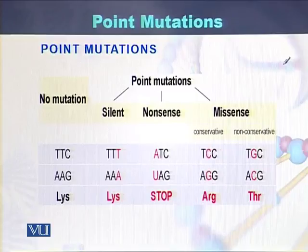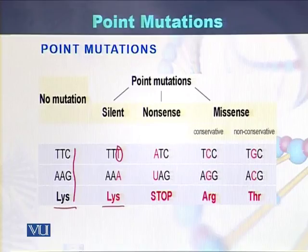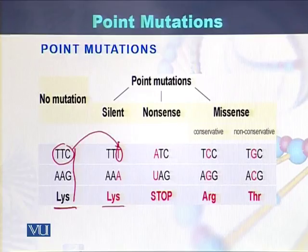This is the normal DNA, RNA, and protein sequence. If there is a point mutation where C is replaced by T, it still produces lysine. In the original sequence, TTC coded for lysine, and with the change of C to T, this codon also codes for lysine. So if there is a change at the DNA level but no change at the protein level, it is called a silent mutation.